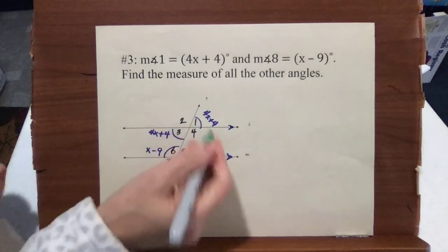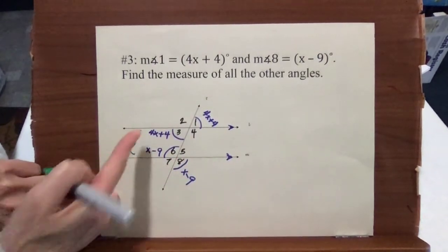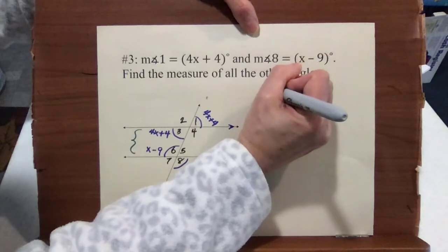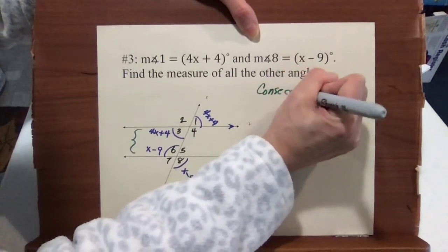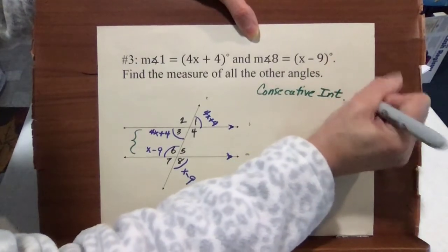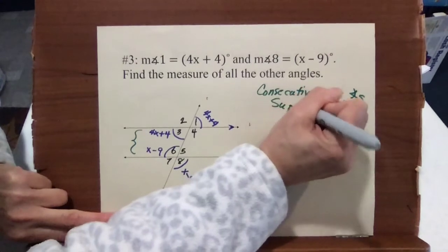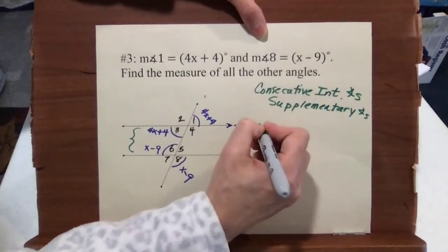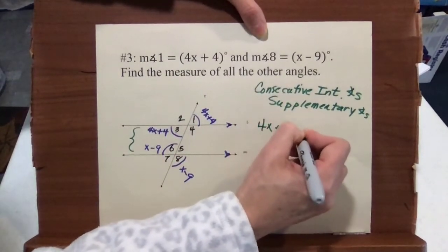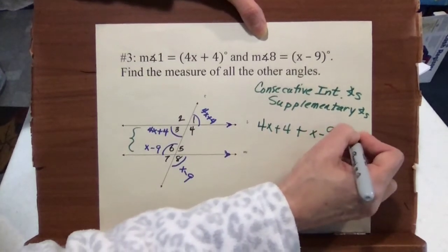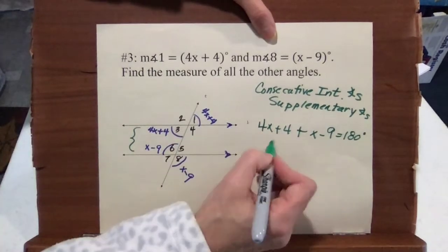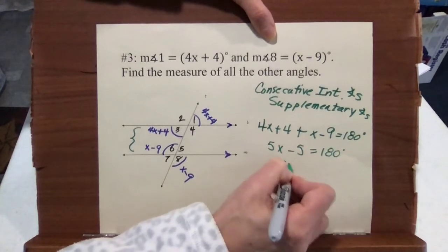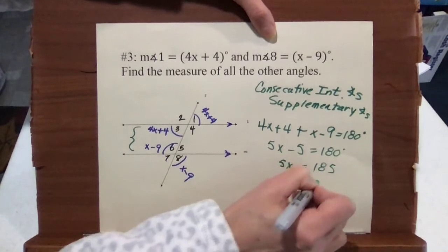Now we can use our parallel lines cut by transversal. Angles 3 and 6 are interior angles between the lines on the same side of the transversal — these are consecutive interior angles. We use the rule that they are supplementary, so we set up: 4x plus 4 plus x minus 9 equals 180. Combining like terms gives us 5x minus 5 equals 180. We add 5 to get 5x equals 185, and solving for x gives us x equals 37.